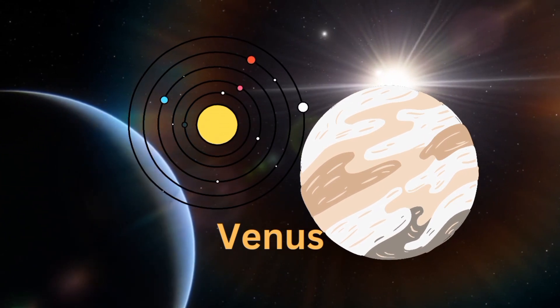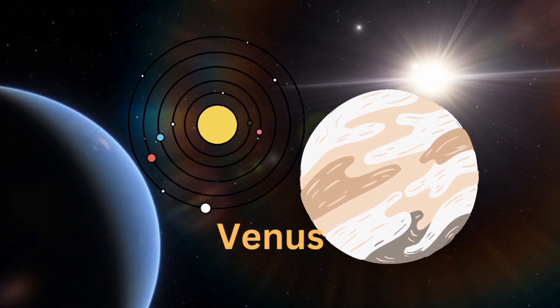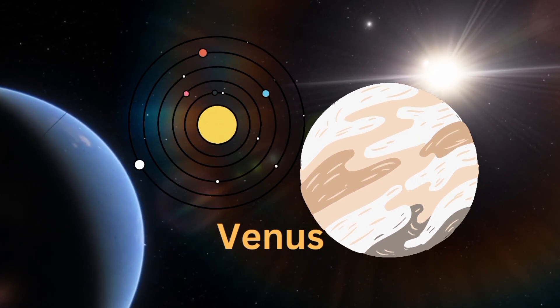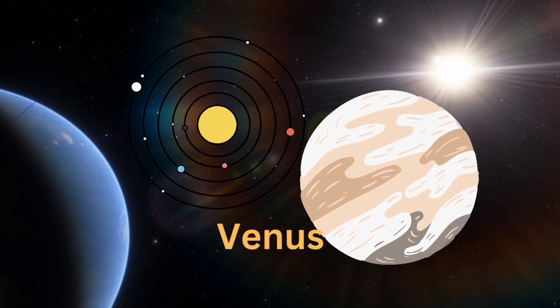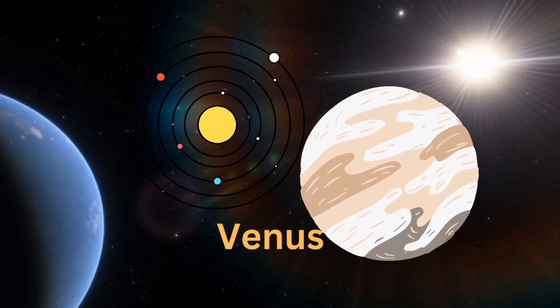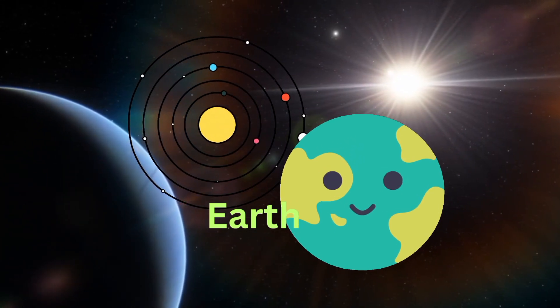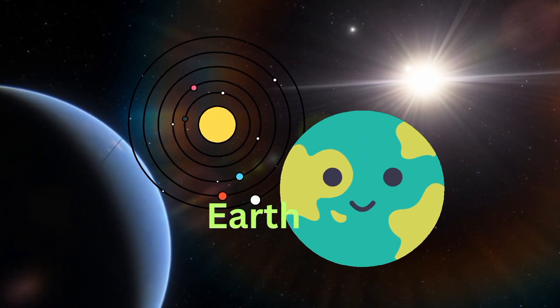My name is Venus. I'm the hottest planet but the second planet from the Sun. I'm the brightest planet in our solar system and I'm too hot for anyone.